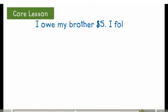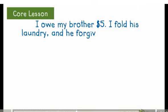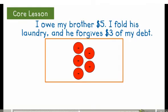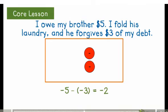I owe my brother $5. I fold his laundry, and he forgives $3 of my debt. I have 5 negative chips to represent my debt. After I do my brother a favor, he removes $3 of my debt, so I can remove 3 negative chips. Negative 5 minus negative 3 equals negative 2. I am still $2 in debt.